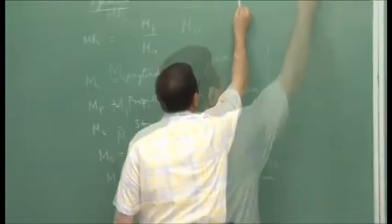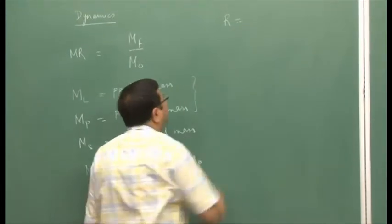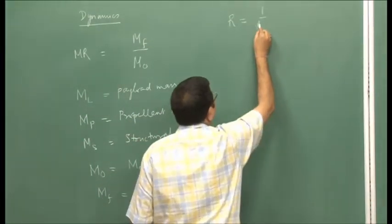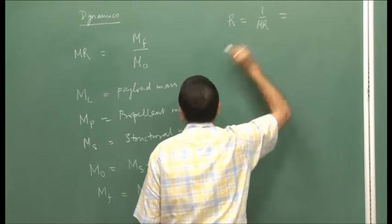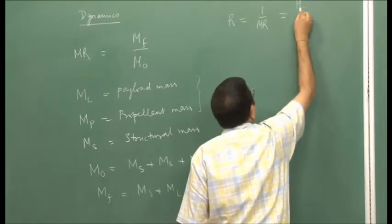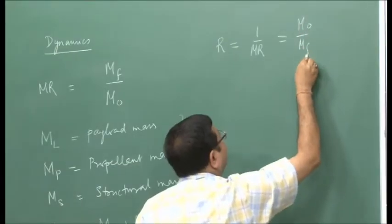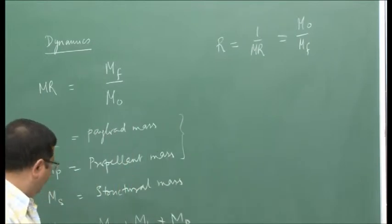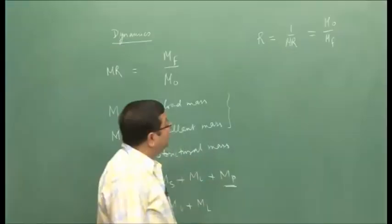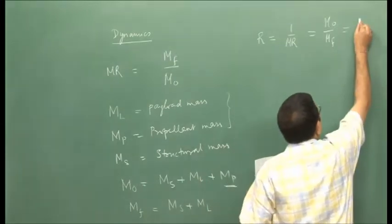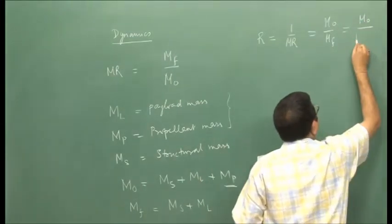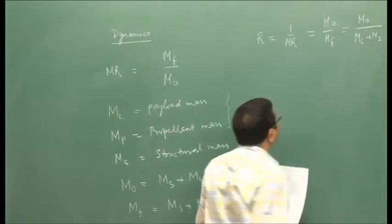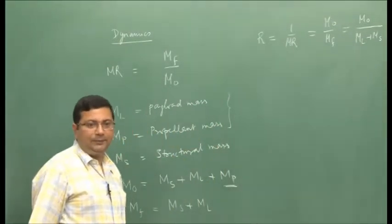We had defined another parameter R, which is the inverse of the mass ratio. Therefore, R is equal to M_naught divided by M_F. If we combine these two definitions, we get R equal to M_naught divided by M_L plus M_S. We had done this last time.